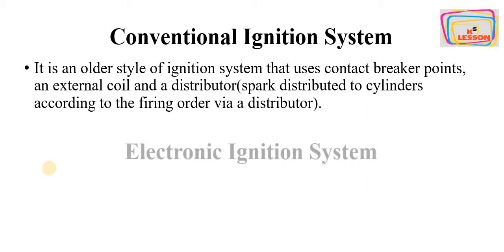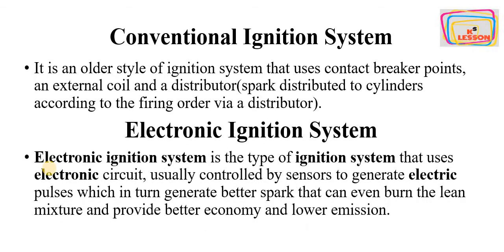The electronic ignition system is a type of ignition system that uses an electronic circuit, usually controlled by sensors, to generate electric pulses which in turn generate a better spark that can even burn a lean mixture and provide better fuel economy and lower emissions.